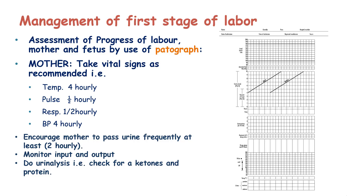The management of the first stage of labour entails the use of a partograph. Assessment of the progress of labour for both the mother and the fetus is done using this tool. For the mother, we take vital signs as recommended: temperature is checked hourly, pulse is checked half-hourly, respirations are done half-hourly, and blood pressure is checked four-hourly.